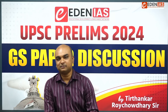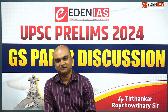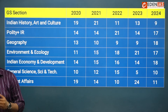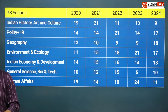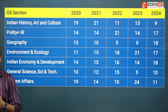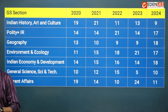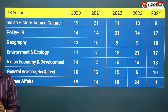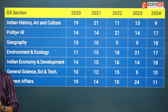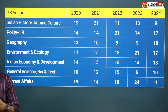Let's try to compare that with some of the previous years for a point of reference. For Indian History, Art and Culture, this year the number of questions were 9, whereas in 2023, 13 questions were asked. Indian Polity and IR saw a slight increase from 14 to 17 questions. Geography was a big surprise — in 2023 there were only 9 questions, but this year the number was 18. Environment and Ecology dropped from 21 to 17, and Indian Economy and Development rose from 14 to 18.